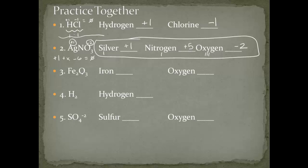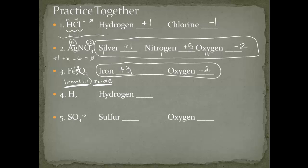For iron(III) oxide (Fe2O3): we have two monatomic ions. Iron(III) is +3 and oxide is -2. Two irons give +6, and three oxygens give -6, which adds up to zero. For H2 (hydrogen gas): it's a pure element, so the oxidation number is zero. For the sulfate ion (SO4²⁻): oxygen is -2 (always rule), and there are four of them, giving -8. Setting up baby algebra: x + (-8) = -2, so sulfur x = +6.